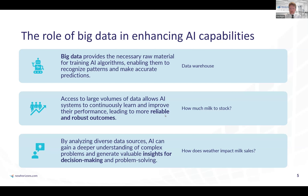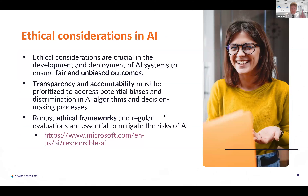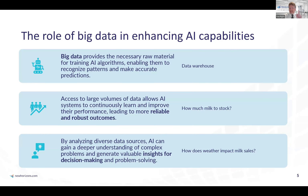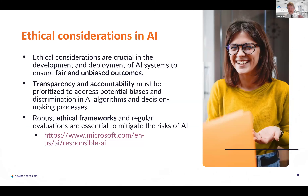AI can help us make decisions — we get insights for decision-making. But if we're letting a computer make decisions, we have to think about what if the computer makes the wrong decision, makes a decision that hurts someone, or makes a biased decision not representative of what we would have chosen. When you start adopting artificial intelligence, you have to think about ethical considerations as well.